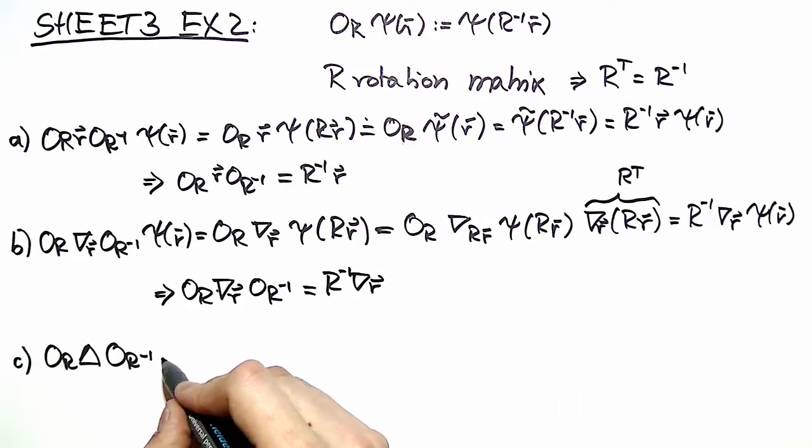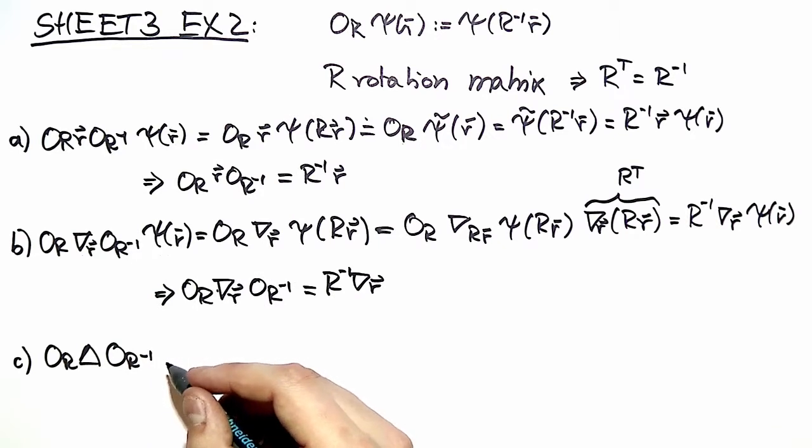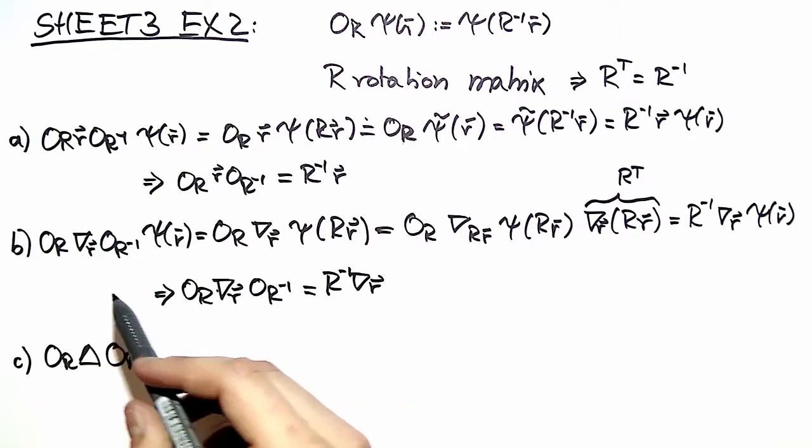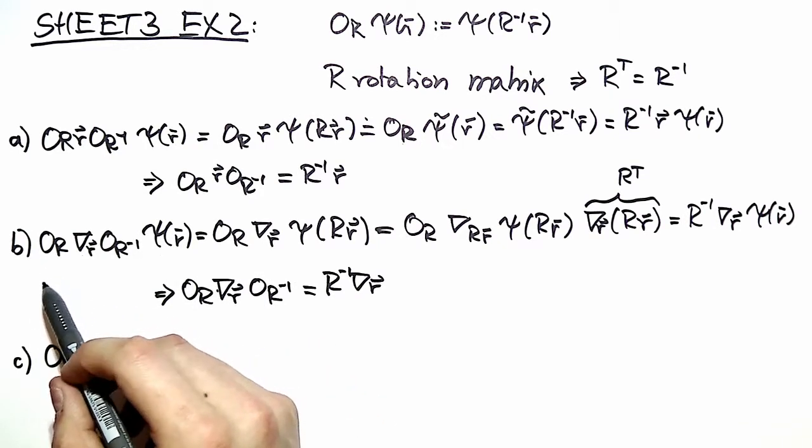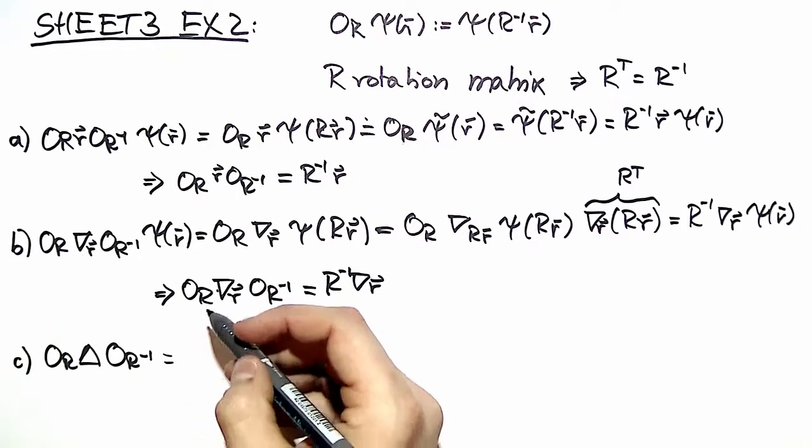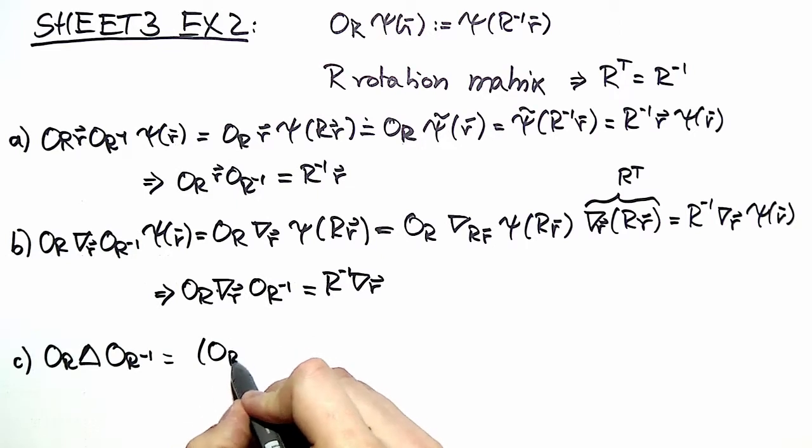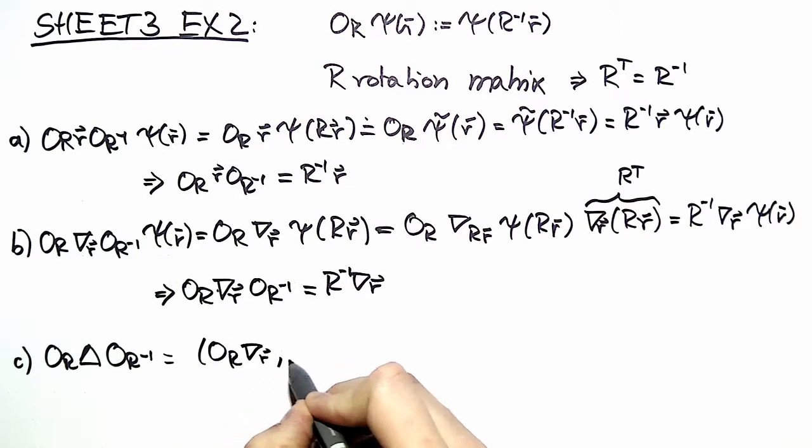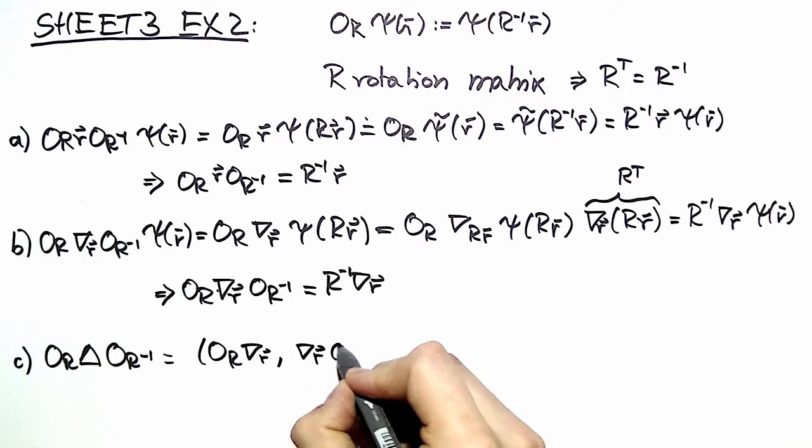In the last part we can save us lots of work if we use what we calculated in part B. So we can rewrite this in terms of a scalar product of two vectors. We have one vector right here and then we multiply it with the second vector over here.